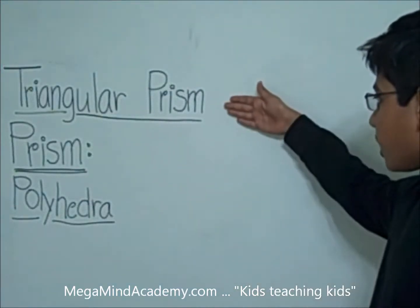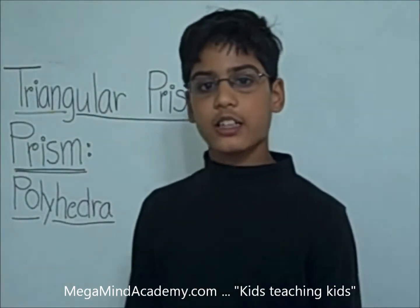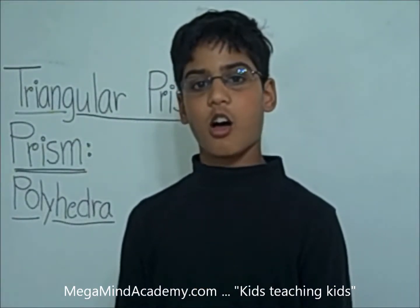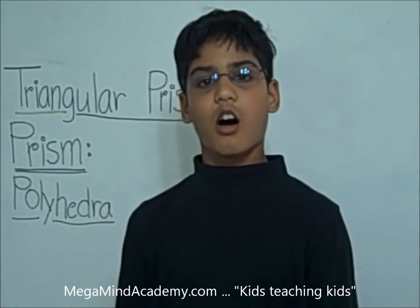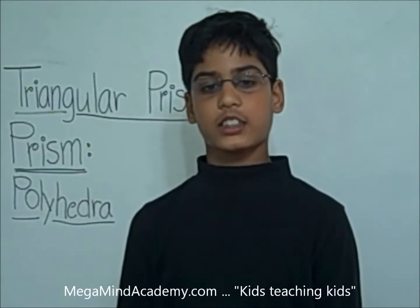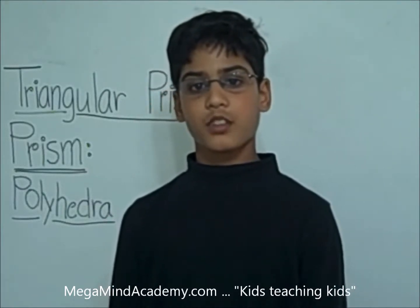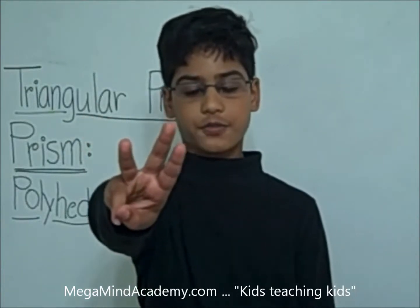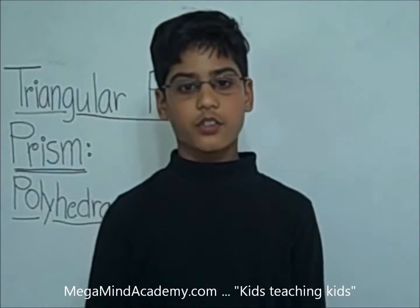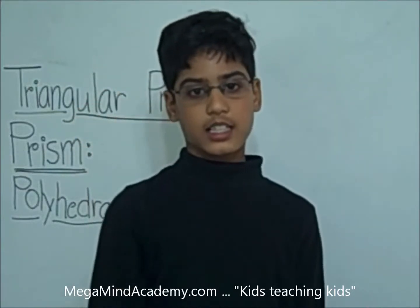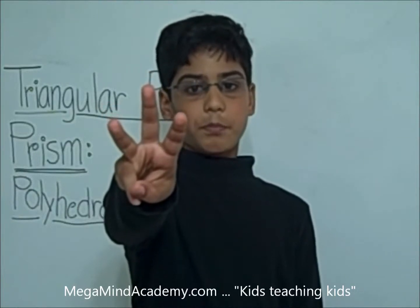Before we learn about triangular prisms, let's first learn about polyhedra. A polyhedra is a 3D figure which has all the faces as flat surfaces, and all the faces are a polygon. That means none of the faces are curved. There are three types of polyhedra: the first one is platonic solids, the second one is prisms, and the third one is pyramids.